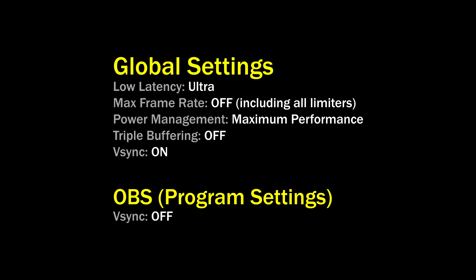You have to turn off any frame limiters including third-party software like RTSS, Bandicam, or anything else. Power management must be set to maximum performance, because if not, the GPU clock speed will go up and down all the time causing a synchronization issue with OBS. This is very critical — you must set this to maximum performance globally. Low latency should be set to ultra because it can help minimize stutters in fast moving scenes. For the OBS program setting, you must turn off V-sync, because we'll be using that later to fix the synchronization issue.